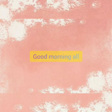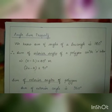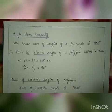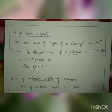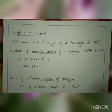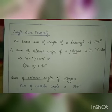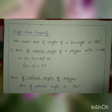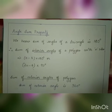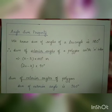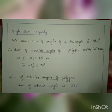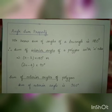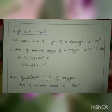Good morning all. Today we can study angle sum property. We know the sum of angles of a triangle is 180 degrees. The angle sum property of a triangle is 180 degrees. So here we are studying angle sum property of interior angles and angle sum property of exterior angles.